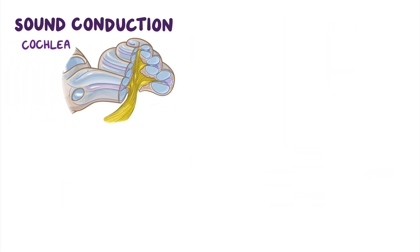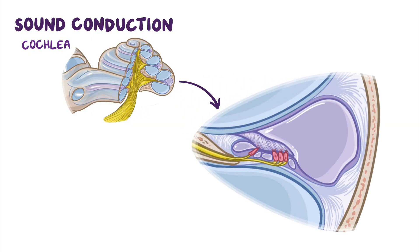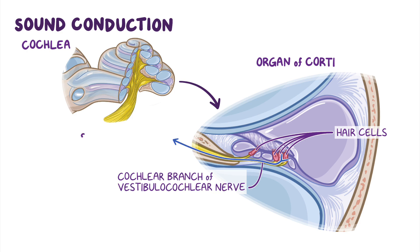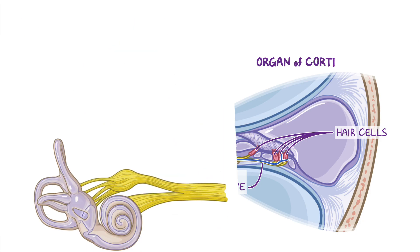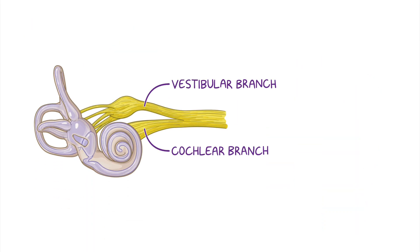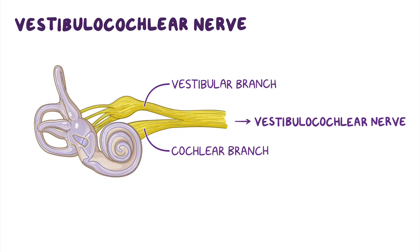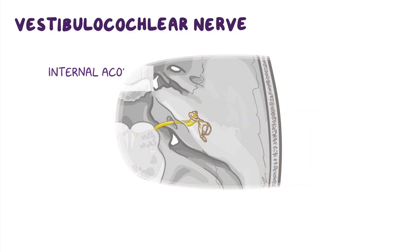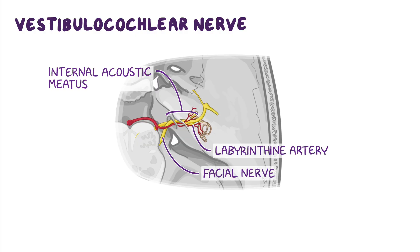They travel within the scala tympani to reach the round window, where the pressure waves are dampened by the secondary tympanic membrane. While traveling within the cochlea, the pressure waves push on the basilar membrane and cause it to move, stimulating the hair cells of the organ of Corti. This creates action potentials that are sent along the cochlear branch of the vestibulocochlear nerve, which has cell bodies in the spiral ganglion. The cochlear branch and the vestibular branch come together to form the vestibulocochlear nerve, which travels through the internal acoustic meatus, accompanied by the facial nerve and the labyrinthine artery, and exits into the posterior cranial fossa to enter the brain stem.